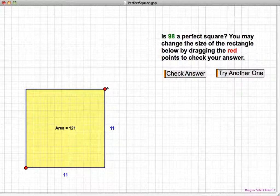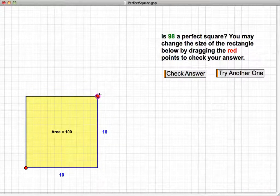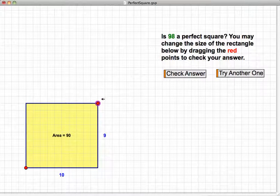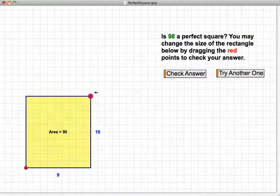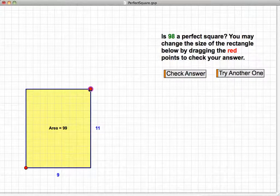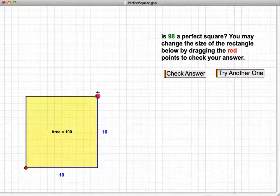So hopefully they'll, if they're not sure, they can try to create a rectangle that has an area of 98. There's one that's 99. There's one that is 100.